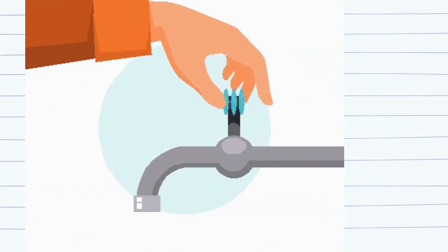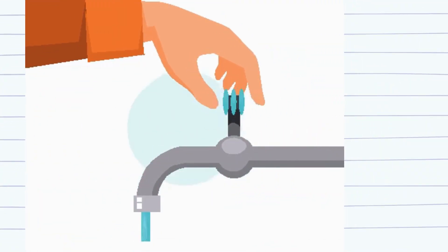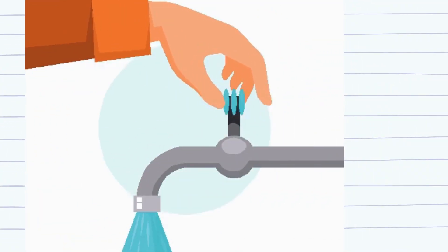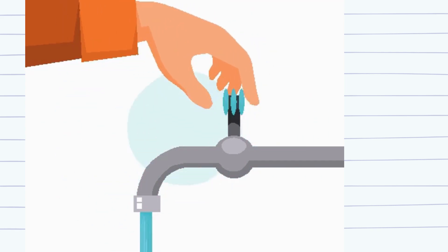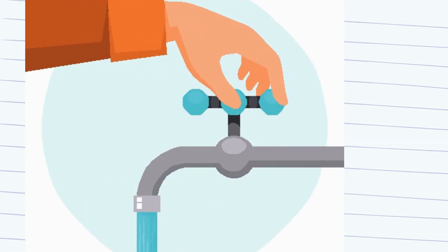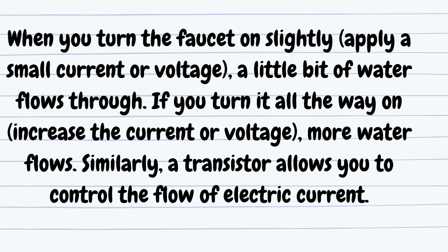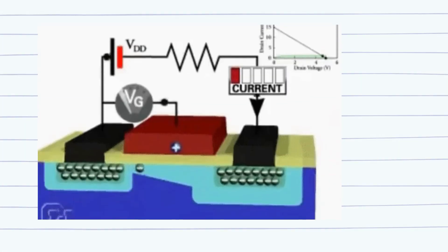How transistors work. To understand a transistor, think of it as a water faucet. When you turn the faucet on slightly — applying a small current or voltage — a little bit of water flows through. If you turn it all the way on, increasing the current or voltage, more water flows. Similarly, a transistor allows you to control the flow of electric current.